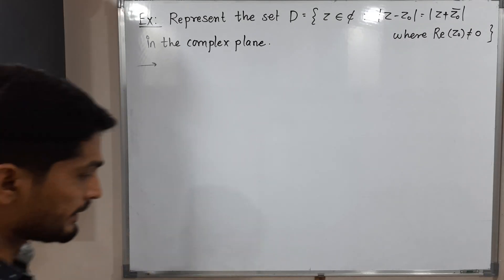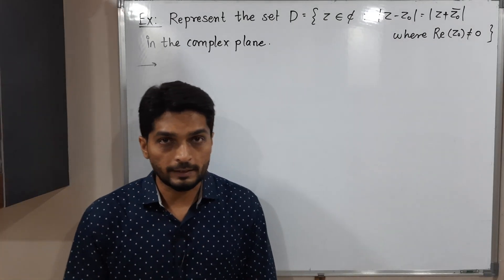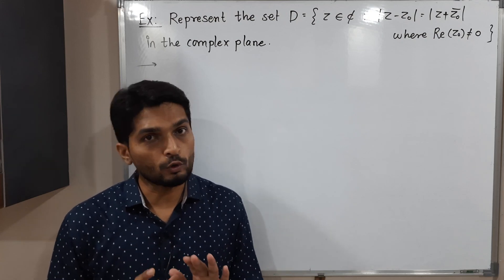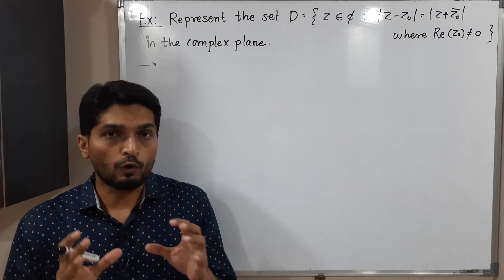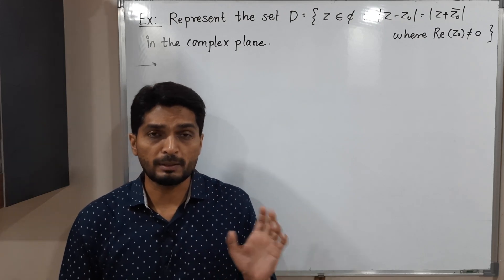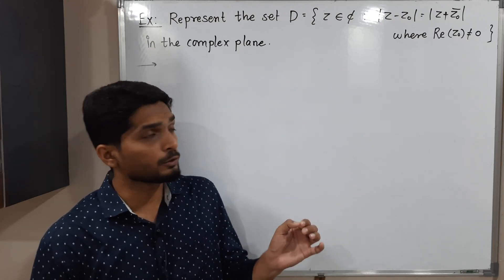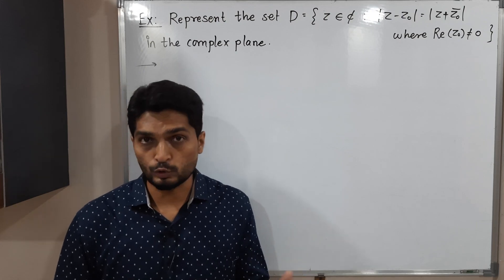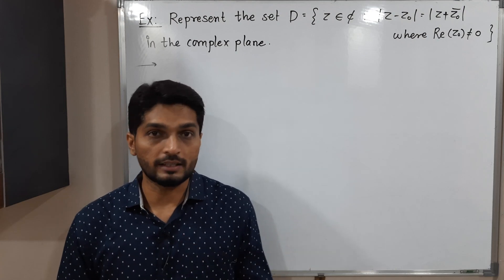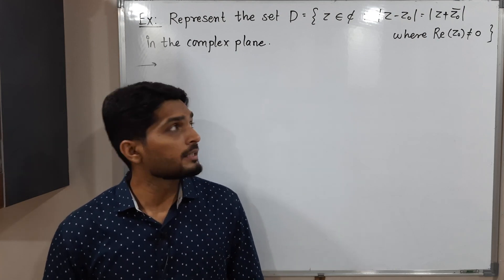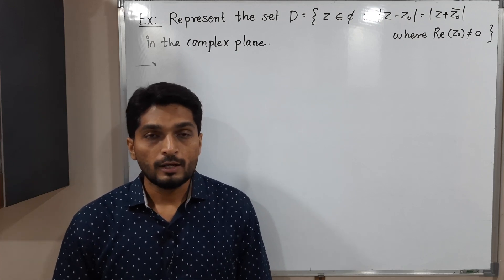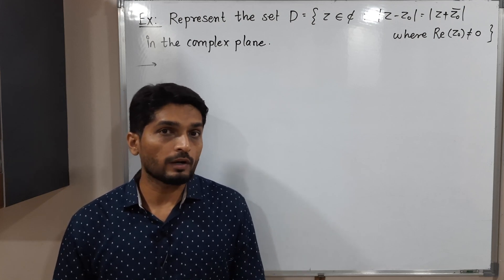Let us discuss this example. We have a set D which is a subset of complex numbers, and we have to represent it on a complex plane. D is the collection of all complex numbers satisfying the condition: mod Z minus Z naught equals mod Z plus Z naught bar, where Z naught bar means the complex conjugate. Z naught is a fixed complex number, and one additional condition is that the real part of Z naught is non-zero.